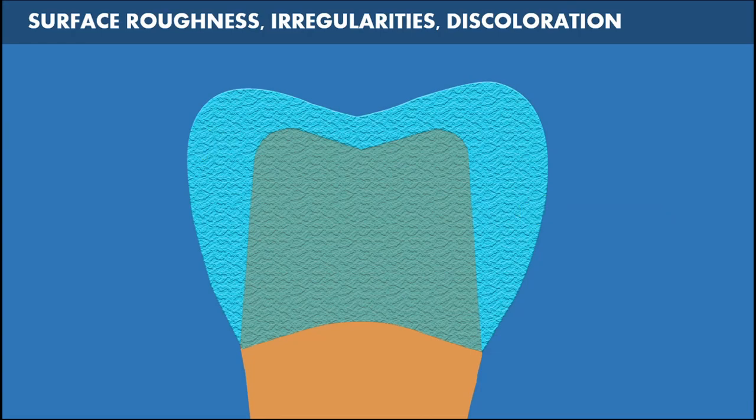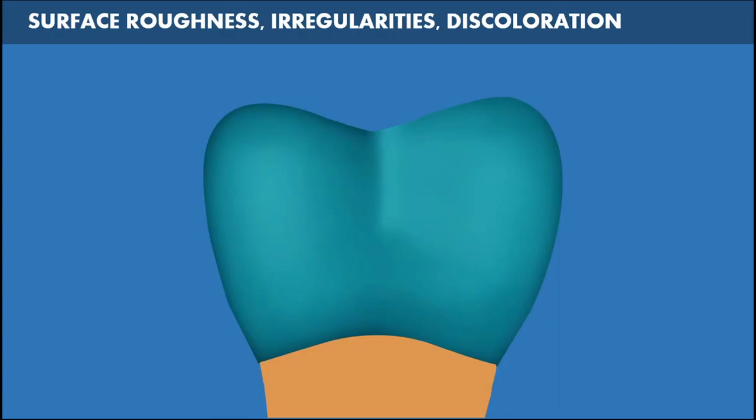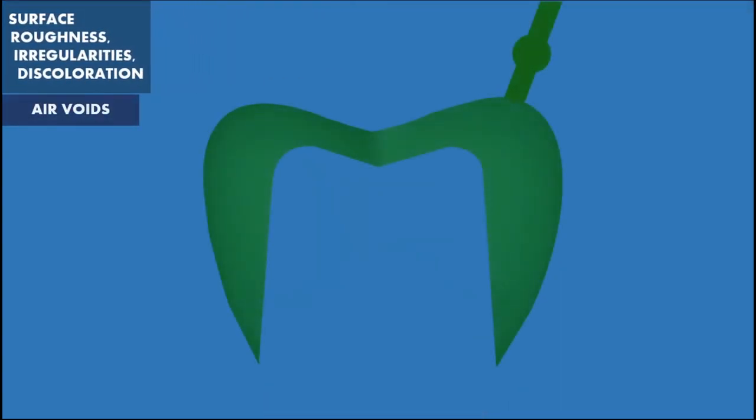Most often, surface roughness is due to the particle size of the investment and improper manipulation of the investment material. Excessive roughness or irregularities on the outer surface of the casting necessitate additional finishing and polishing whereas irregularities on the inner surface may prevent proper seating of the casting thus leading to casting failure. While surface roughness is small and covers the entire surface of the casting, surface irregularities are isolated imperfections which are usually big, for example like a nodule.